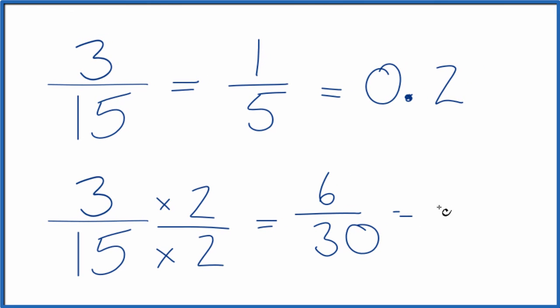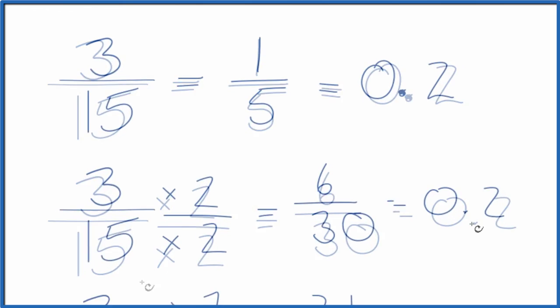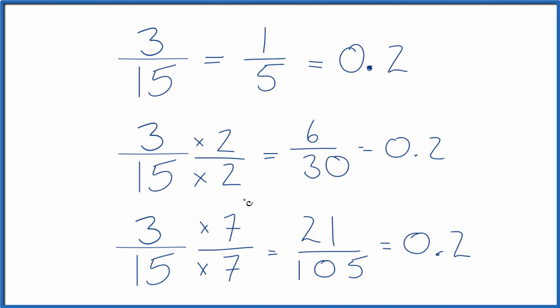Divide 6 by 30, you get 0.2, just like before. One more. We can multiply 3 fifteenths by 7 over 7, which is just 1. We get 21 over 105, another equivalent fraction for 3 fifteenths.